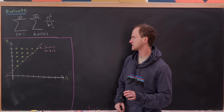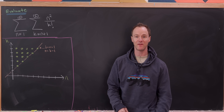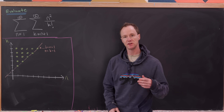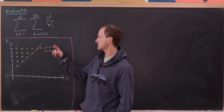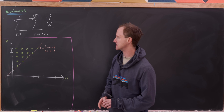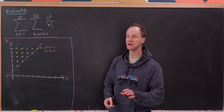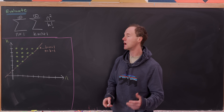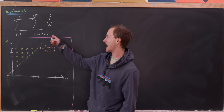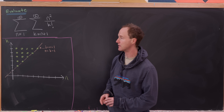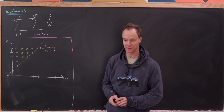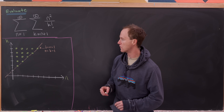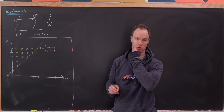Today we're going to look at this double sum and evaluate it two ways. The sum in question is the sum as n goes from 1 to infinity of the sum as k goes from n plus 1 to infinity of n squared over k factorial.